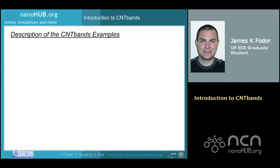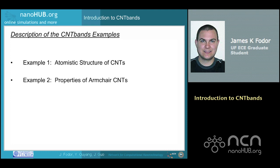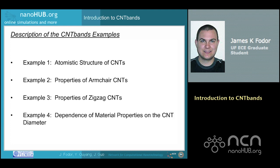This learning module works out four examples for the CNT-Band Simulator, which are designed to demonstrate both the operation and capability of the simulator. The first example examines the atomistic structure of various CNTs. The second focuses on properties of the armchair CNT. The third covers the zigzag CNT, and finally the fourth example looks at how diameter affects material properties.